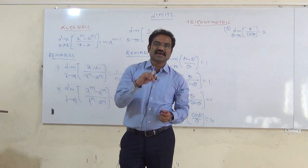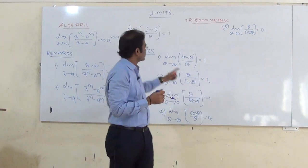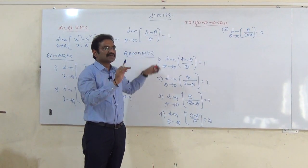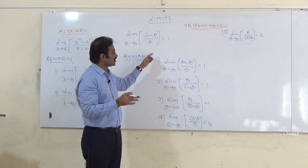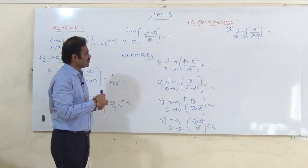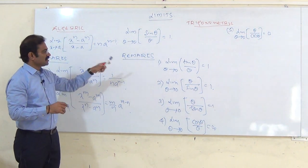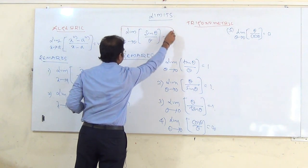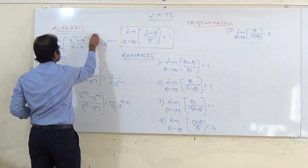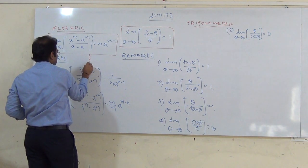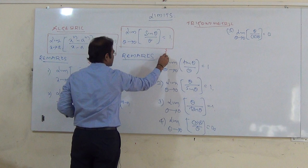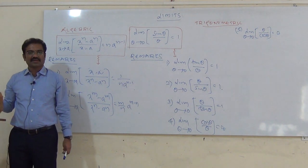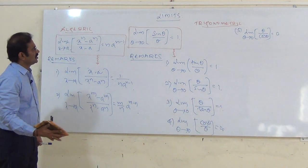This is about algebraic and this is about trigonometric limits — we discussed this much. Now, I have to continue with the exercise because yesterday I did not solve the problems. So first make a list of these identities. These are the main identities; using the main identity, we derive the remarks.